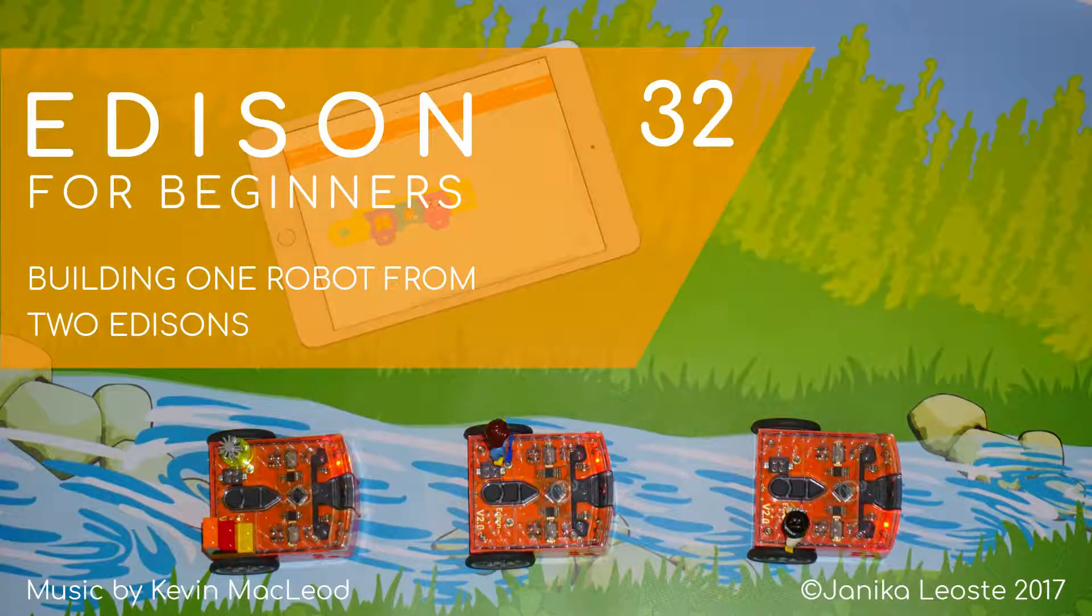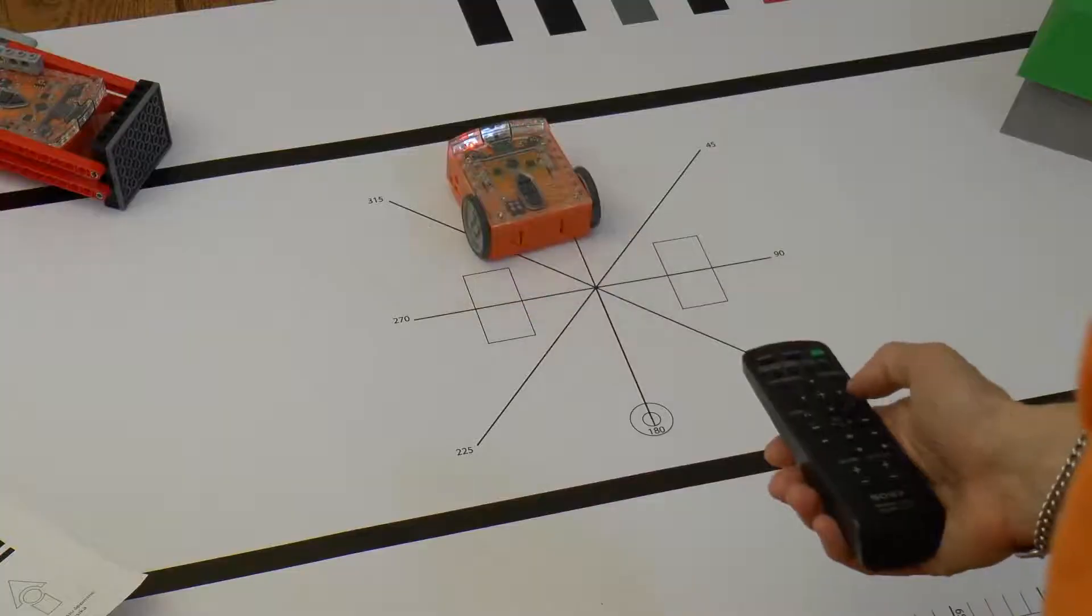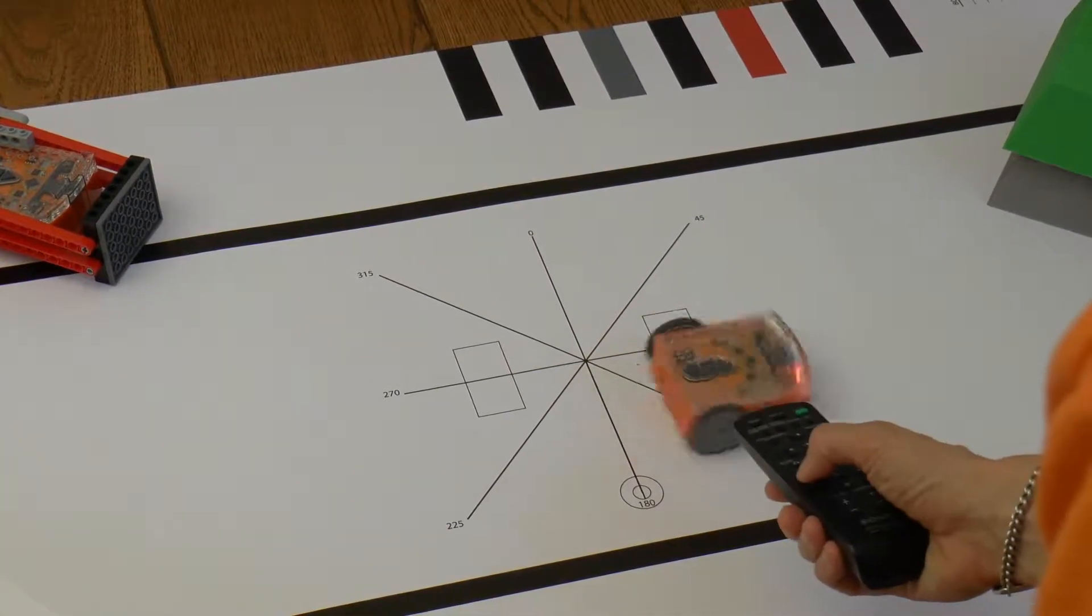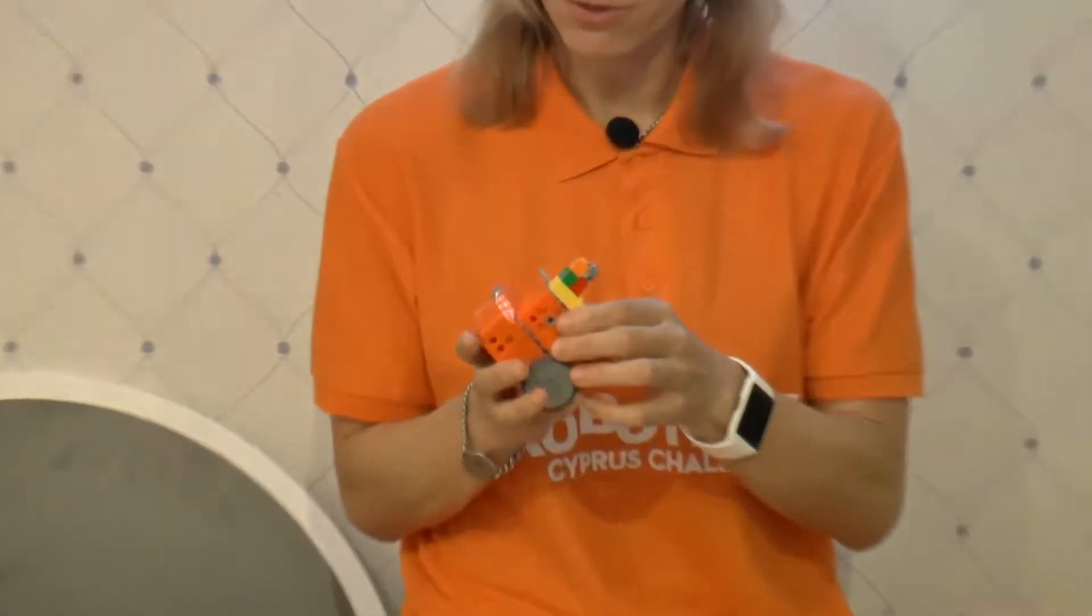Building one robot from two Editions. In the last video we learned how to remotely control Edison with a TV remote. In this video we will see how to combine two Editions into one robot.